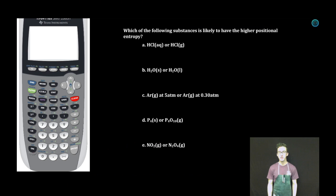All right, let's take a look at a couple of examples. Which of the following substances is likely to have the higher positional entropy, aqueous hydrochloric acid or gaseous hydrochloric acid. Answer, gaseous hydrochloric acid. Again, your gases further spread out than those things in solution and therefore will be considered to have a greater entropy. Solid H2O or liquid H2O? Correct answer, liquid H2O.